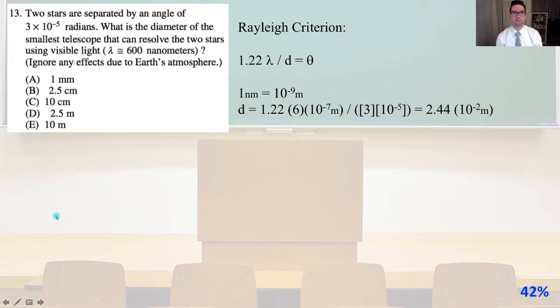Number 13, two stars are separated by an angle of 3 times 10 to the minus 5 radians. What is the diameter of the smallest telescope that can resolve the two stars using visible light where lambda equals 600 nanometers, ignoring any effects due to Earth's atmosphere? We can apply the Rayleigh criterion where 1.22 lambda over DI equals beta. One nanometer equals 10 to the minus 9 meters. DI equals 1.22 times 6 times 10 to the minus 7 divided by 3 times 10 to the minus 5, which equals 2.44 times 10 to the minus 2 meters and that is going to equal about 2.5 centimeters and that is answer B.